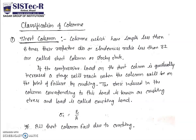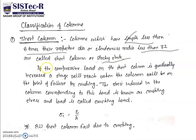Classification of columns: there are three types — short column, medium, and long column. A short column is one whose length is less than 8 times its respective diameter and whose slenderness ratio is less than 32. Its failure mode is due to crushing. When you increase your load gradually to a stage when the column is on the point of failure by crushing, it is characterized by crushing stress sigma C, and crushing load Pc equals crushing load divided by area.